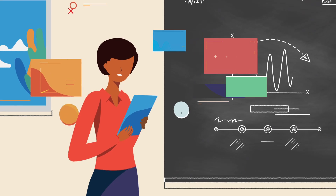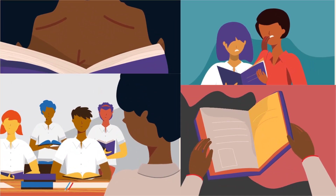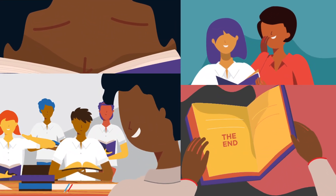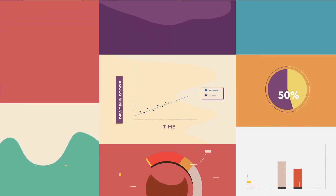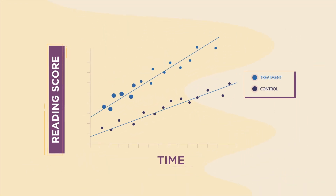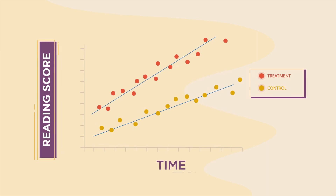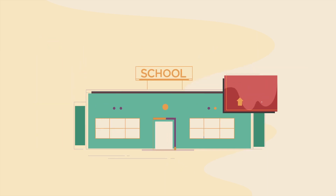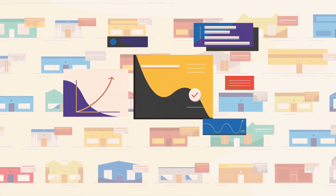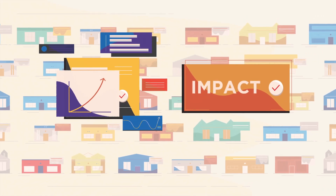If you're getting the results you expected, you conduct a full RCT to measure final outcomes and see whether student reading is improving. This time, your evidence shows that student reading scores in the program are 25% higher than students who didn't participate. Based on those results, you scale up, conducting routine monitoring to ensure your program continues to achieve impact.